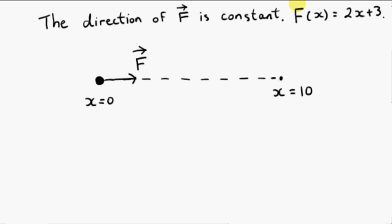F without the arrow refers to the magnitude of F, and that magnitude is given by 2x plus 3. You can see that the particle starts at x equals 0 and ends at the point x equals 10.